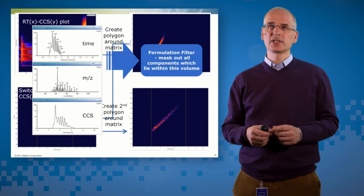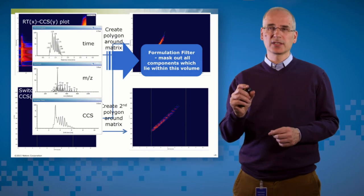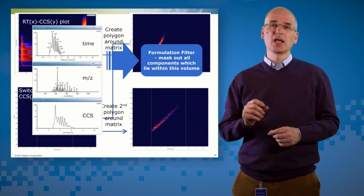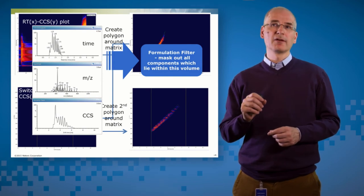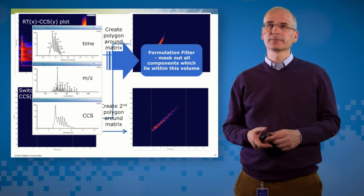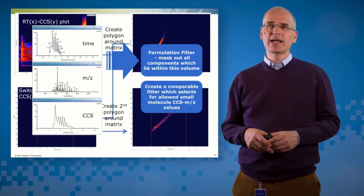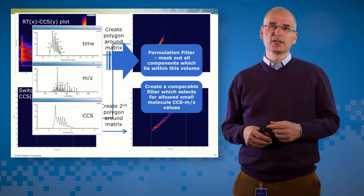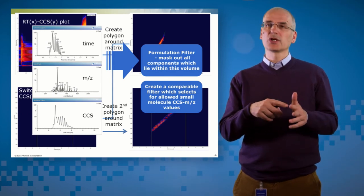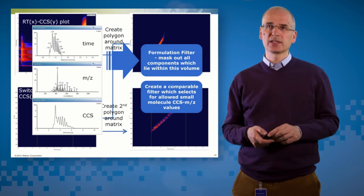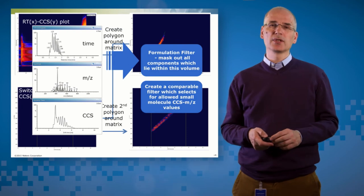And having done that, I can create a formulation filter. So this is something that's going to lie inside my processing method. And I can say, if a detected component lies inside that volume, flag it as potentially belonging to matrix. So one that I perhaps don't have to consider. And I could create a comparable filter, which selects positively for small molecule mass over charge retention time CCS space. And I can include that filter in my data processing.